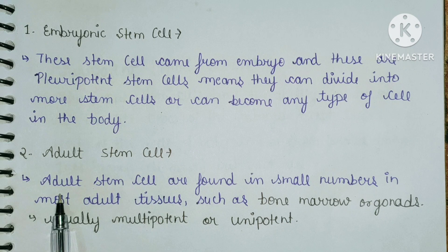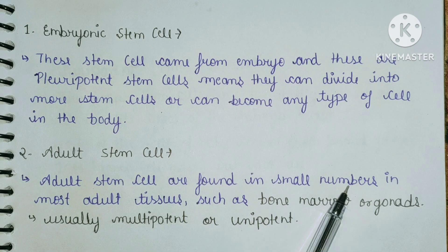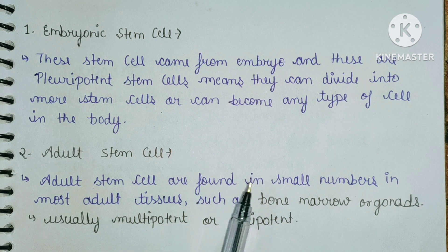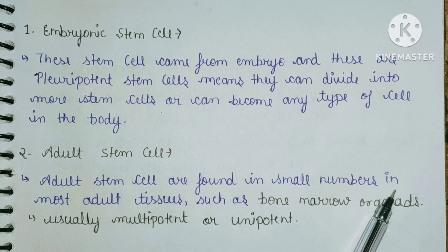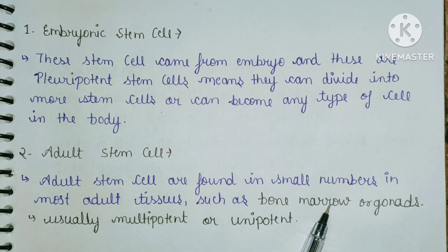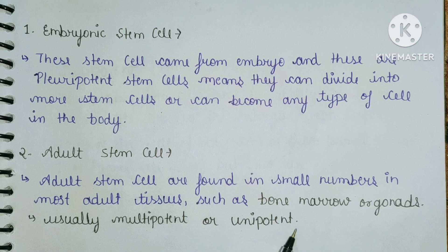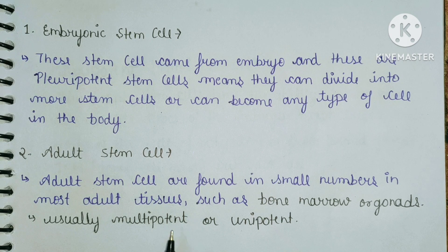Adult stem cells are found in small numbers in most adult tissues, such as bone marrow and gonads. Usually they are multipotent or unipotent. Multipotent means they can divide into different types of cells, while unipotent means they can only divide into a single type of cell.